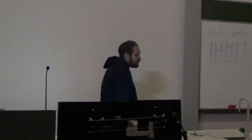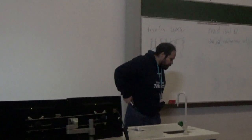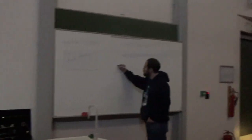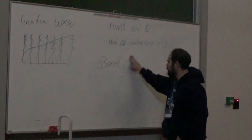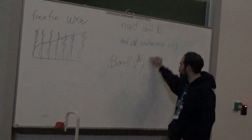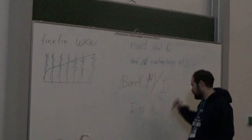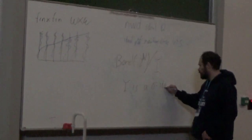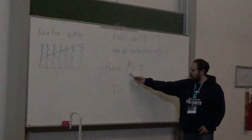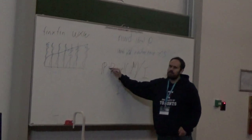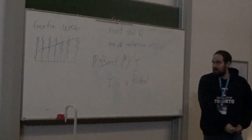This result is stated for Cohen forcing, but there are similar results for Sacks, Miller, and Laver, among many other forcings. Mainly you need forcings that are proper, have continuous reading of names, and are of the form for some σ-ideal I — that is, the forcing is P(X)/I. If the forcing happens to be proper with continuous reading of names, then there is a theorem of this sort: when it destroys certain ideals, that can be completely characterized in terms of the Katětov order.